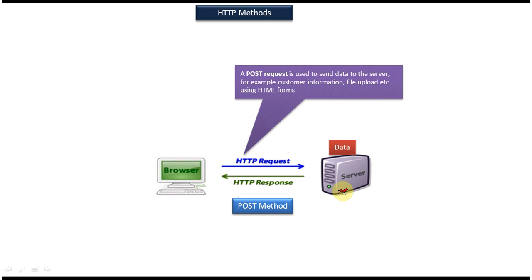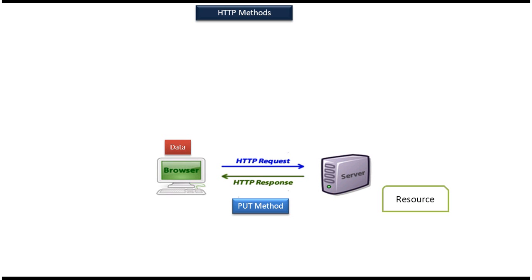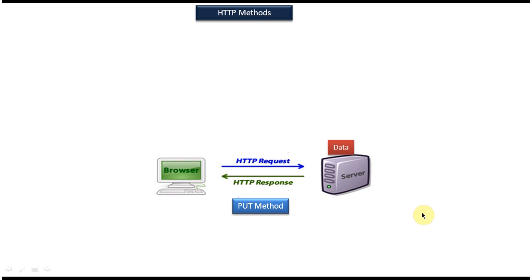Next we will see the PUT method. Here you can see the server has some resource. Suppose I want to update this resource information — I can use the PUT method. Data goes from client to the server and the data will be updated in the particular resource. If that resource does not exist, then the PUT method will create the resource on the server side.